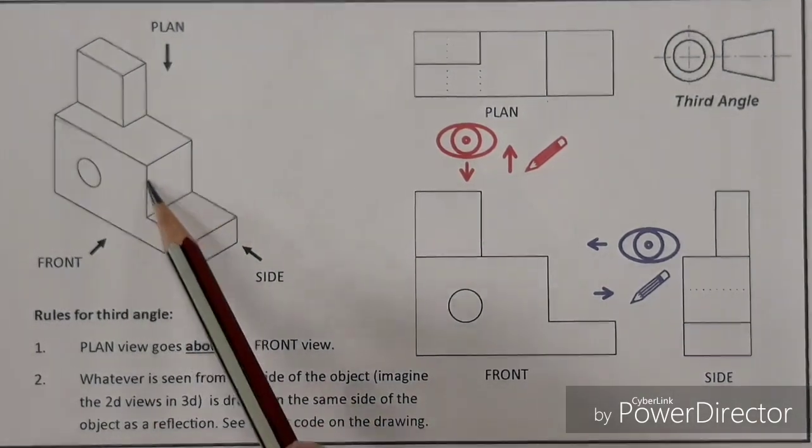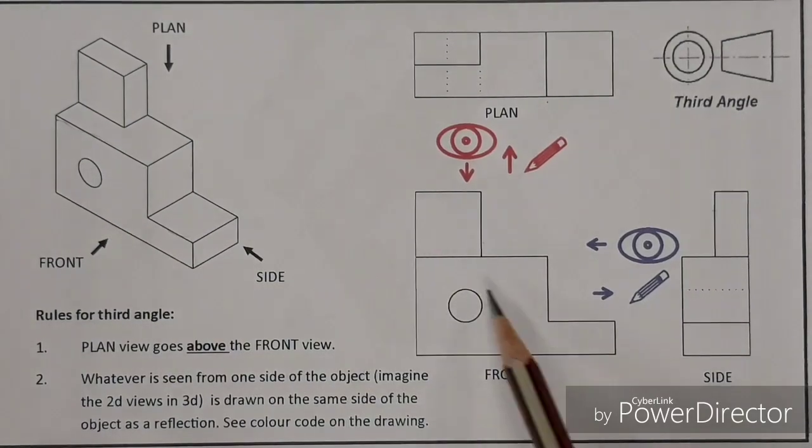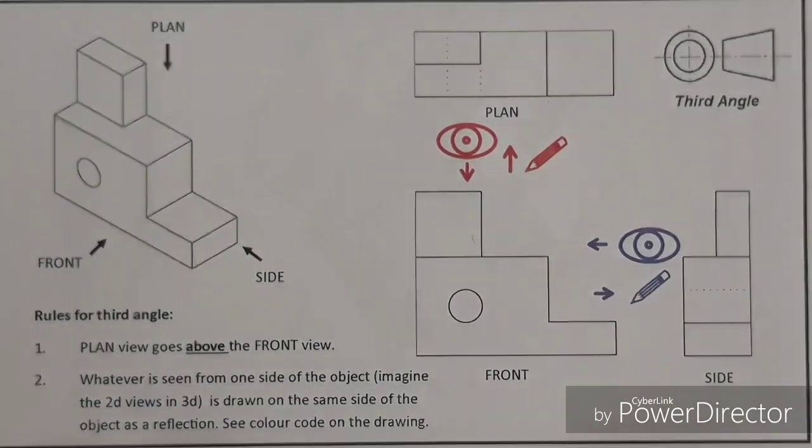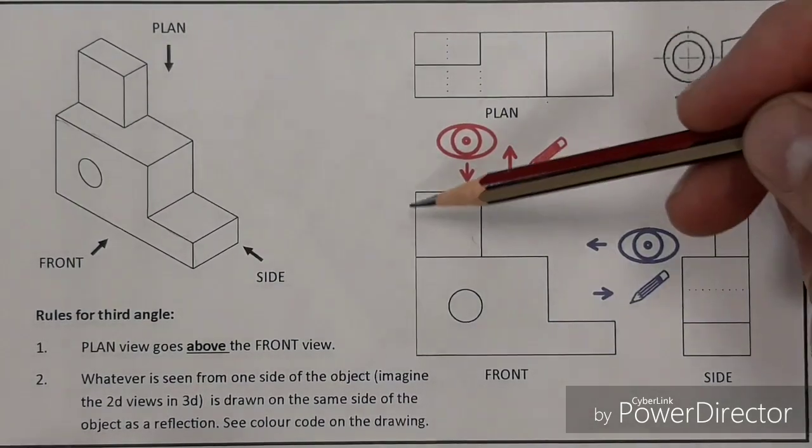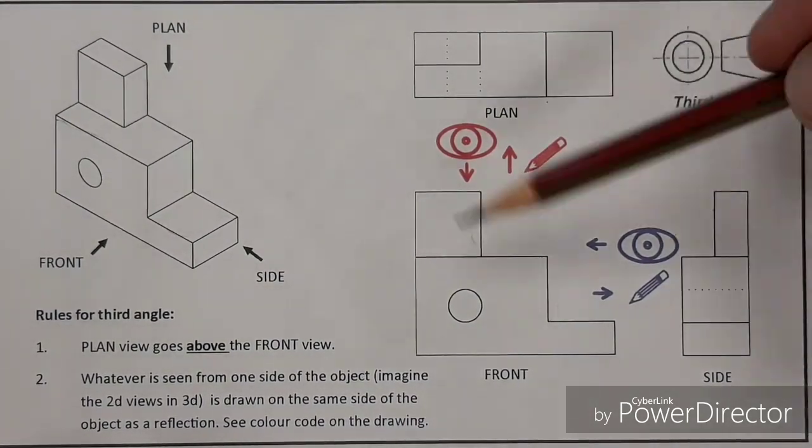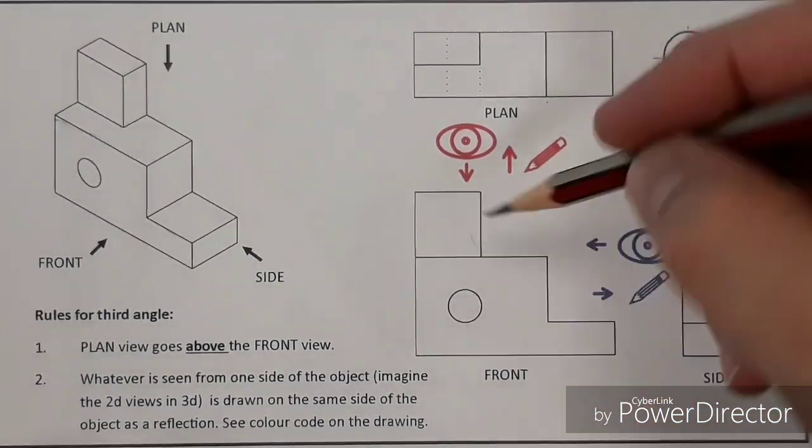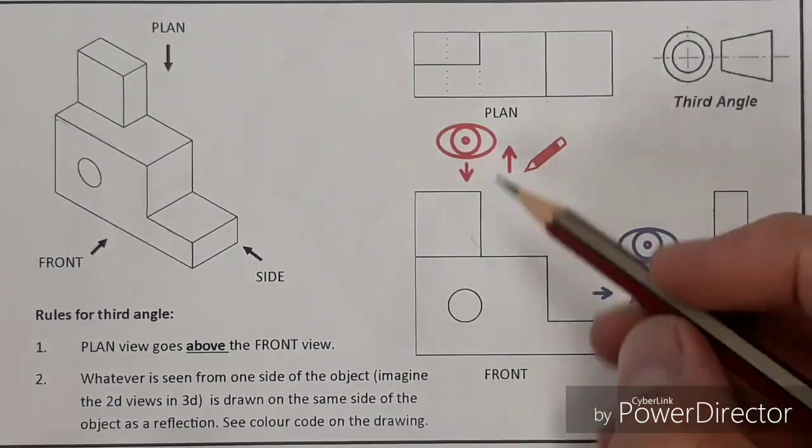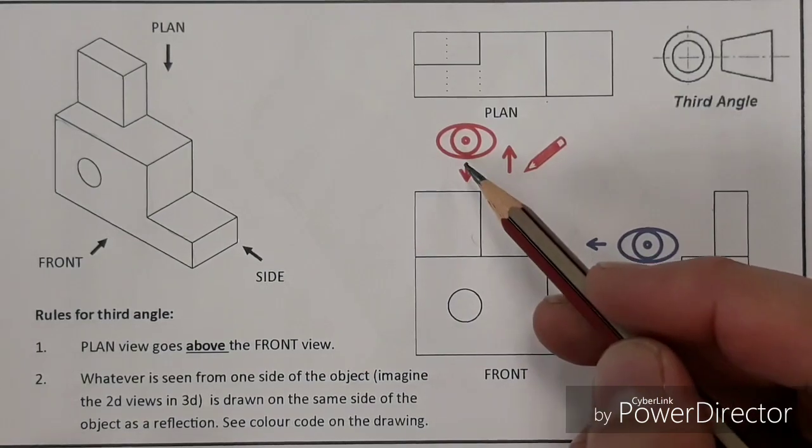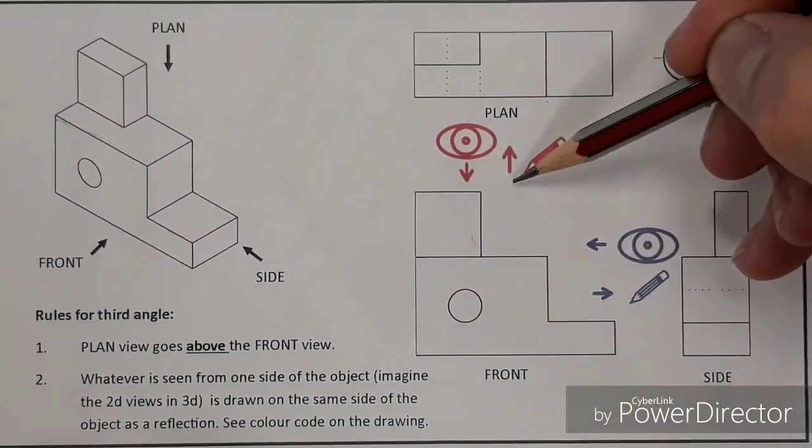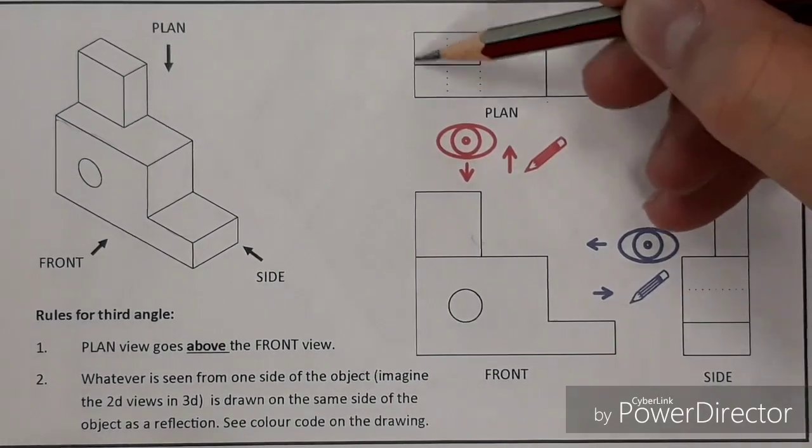In terms of what we see, we can also break this down. Front view, we see this outline shape here, we see the circle inside, and we see this bit protruding at the top. Directly above that, we've got the plan view, which let's imagine that this 2D view of the front became 3D. We have to imagine what we're seeing from here. On this resource that I've made, the eye is looking down, and the line goes back up, and it is drawn above.